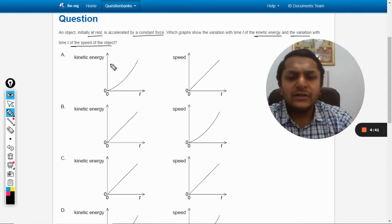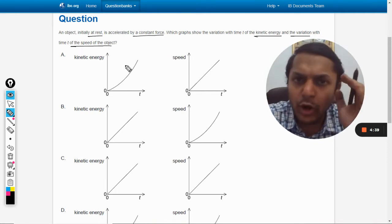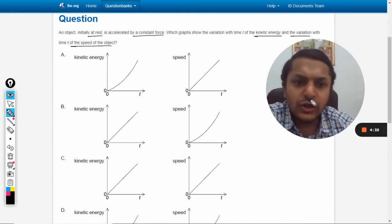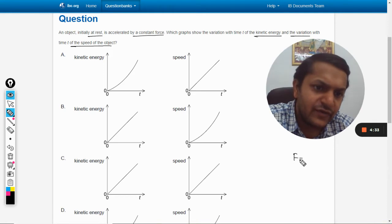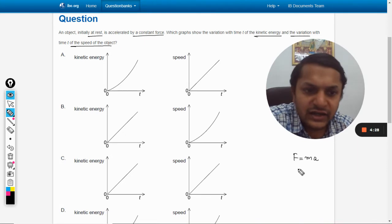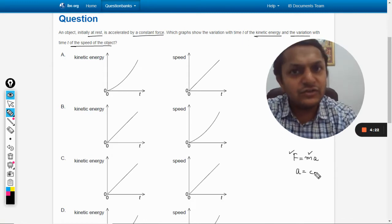It is given that the body is being subjected to a constant force. So if we apply the formula F equals m into a, and we say that the mass of the body is constant, under that condition we say F is constant, m is constant, we jump to this conclusion that acceleration should be constant.